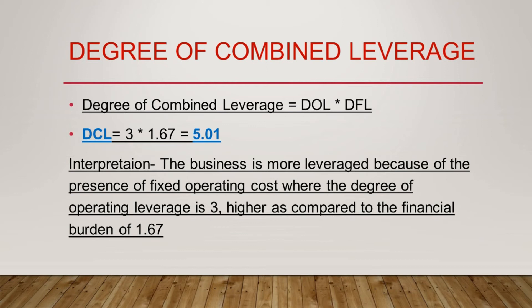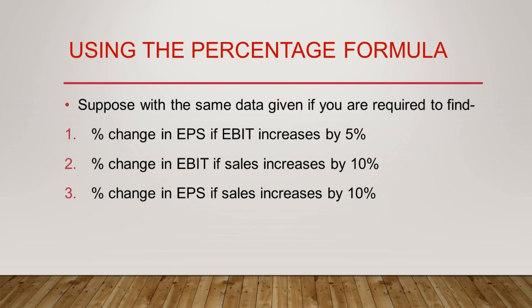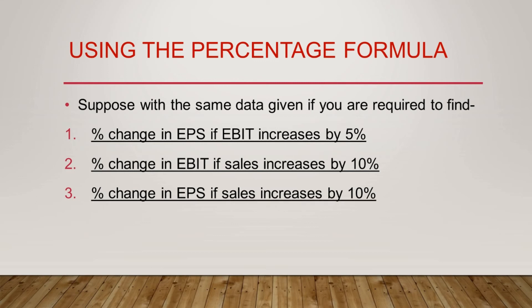There is no fixed number that is universally good for the business; it is measured in terms of industry standards. Whichever industry or sector your business is in, you compare the degree against the standards of that industry or sector. Now talking about the percentage formulas — for operating, financial, and combined leverages we have two formulas. We have already seen the first formula. Now we will see the percentage change formula with the same given data: find percentage change in EPS if EBIT increases by 5%, and find the impact on EBIT and EPS if sales increases by 10%.